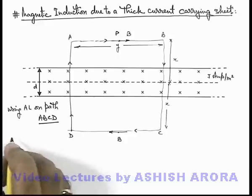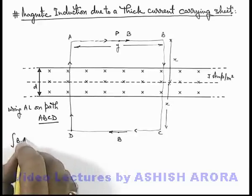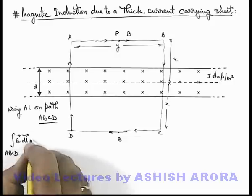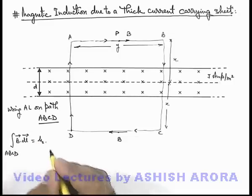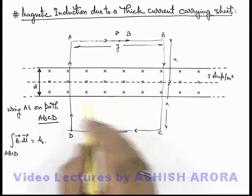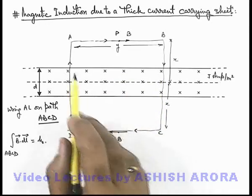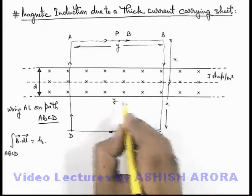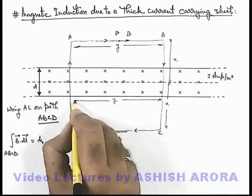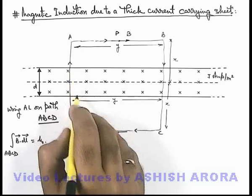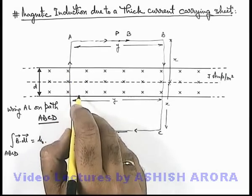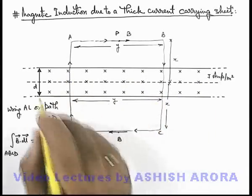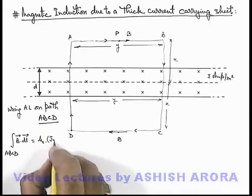Using Ampere's law on path ABCD, we get: the closed line integral of B·dl for path ABCD must be equal to μ₀ multiplied by the enclosed current. The total enclosed current by the path — since the length of this path is y and the thickness of the current-carrying sheet is d — can be written as jyd.